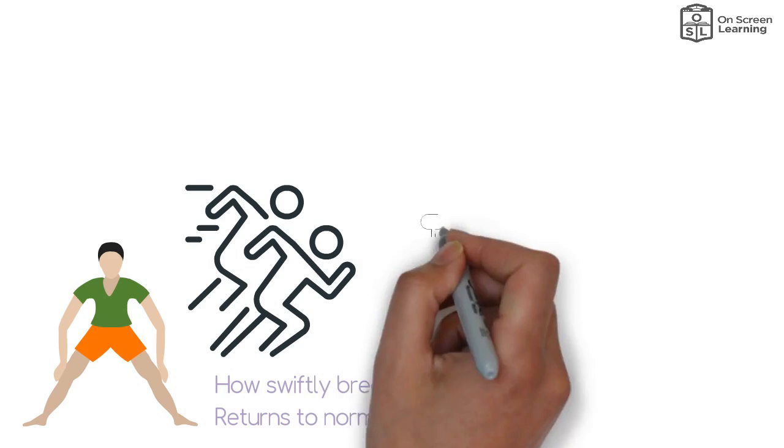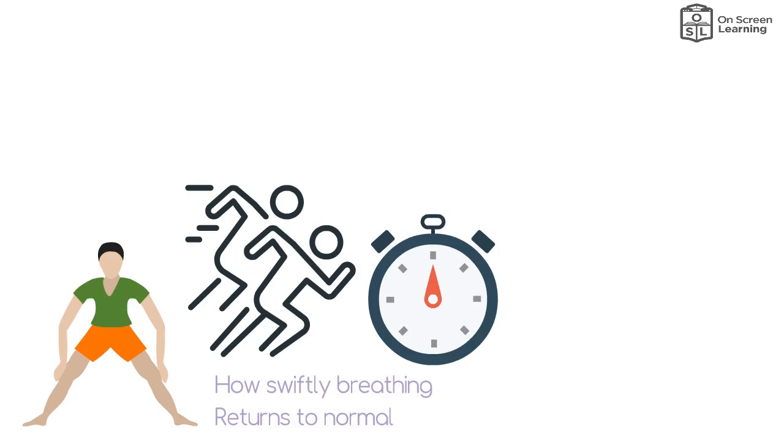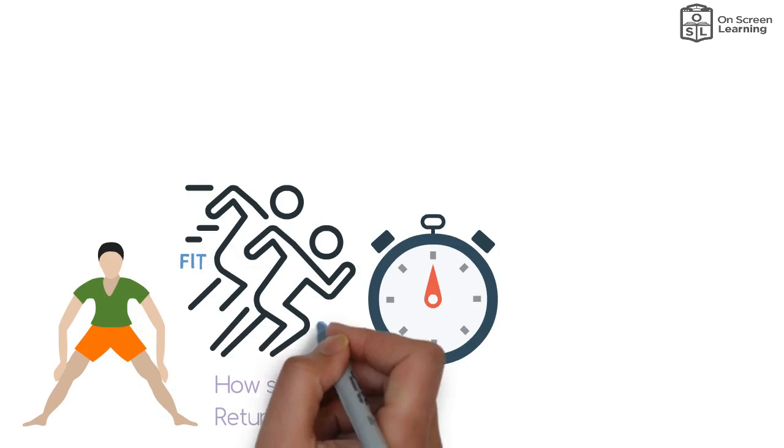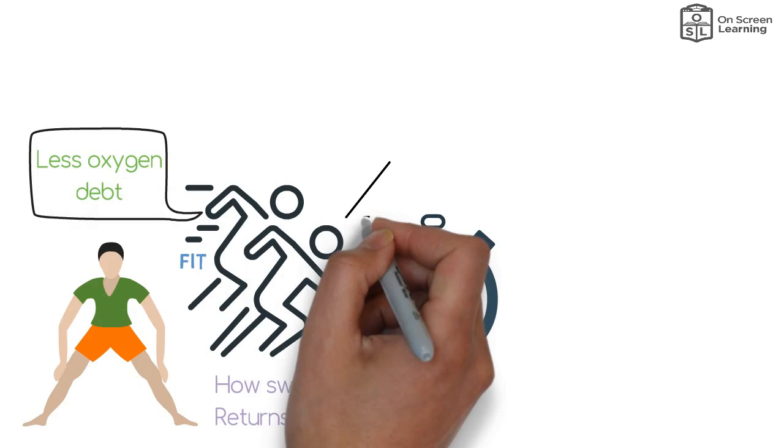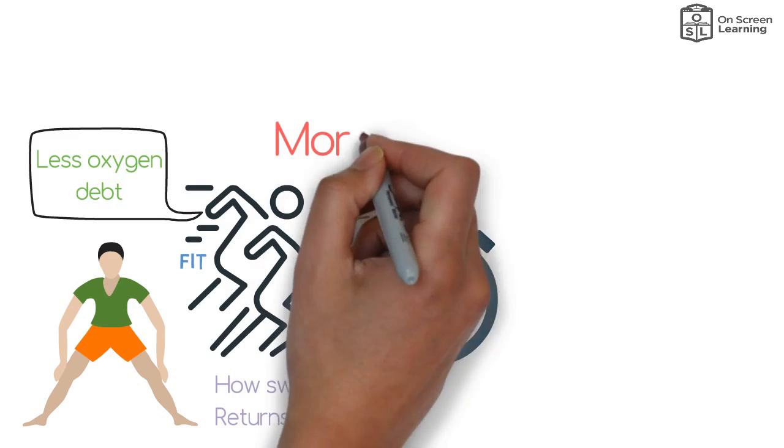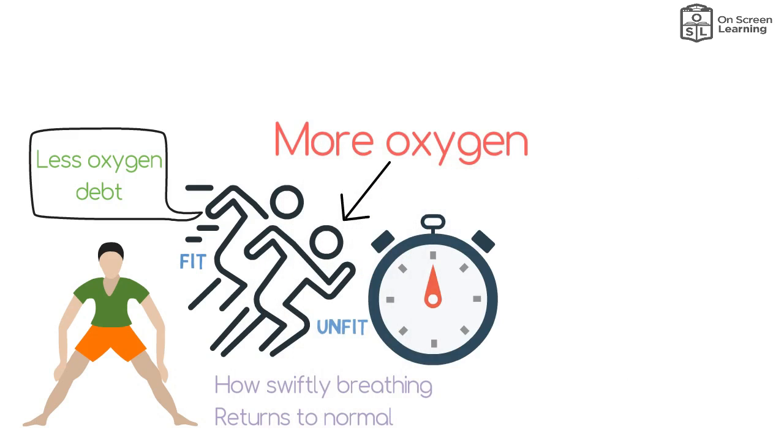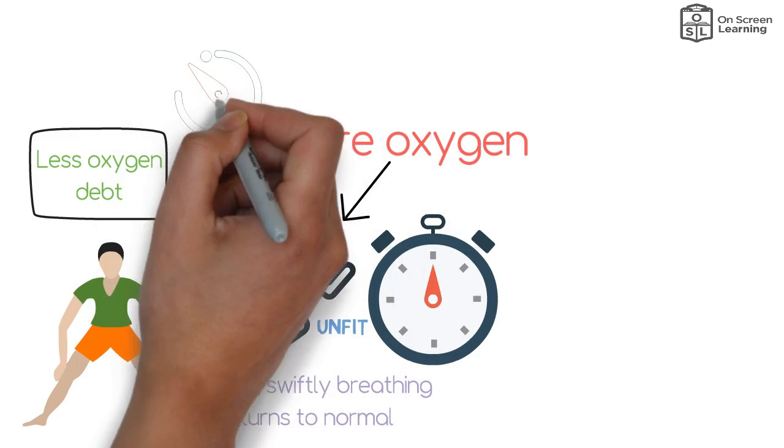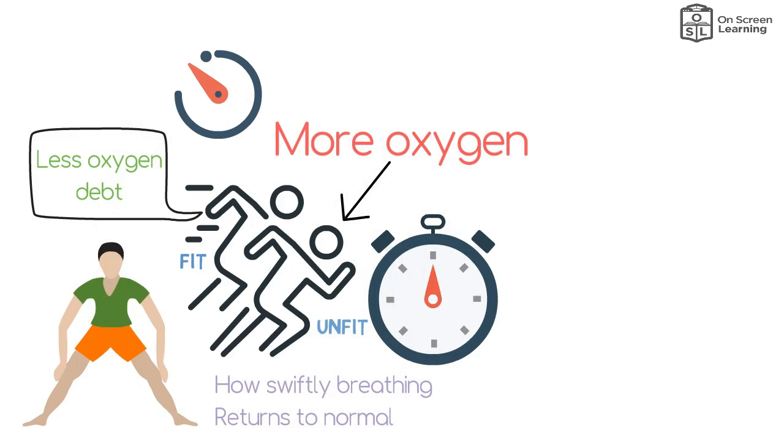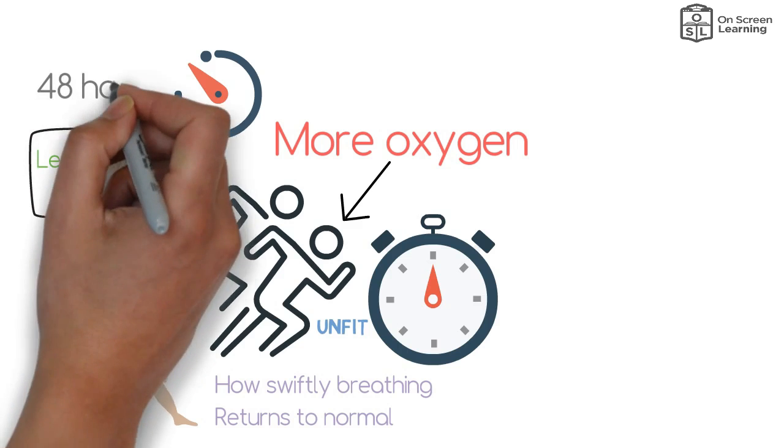Two people run for 800 meters and finish at the same time. One person is fit and the other is unfit. The fitter person will have less oxygen debt while exercising, while the other will need a lot more oxygen to break down the lactic acid in their muscles. The fitter person returns to normal within seconds. The unfit person can take up to 48 hours.